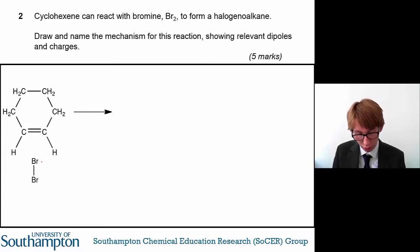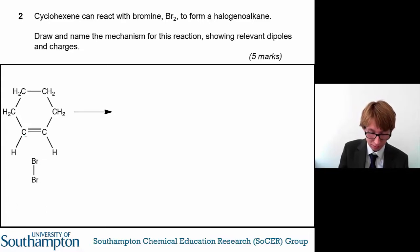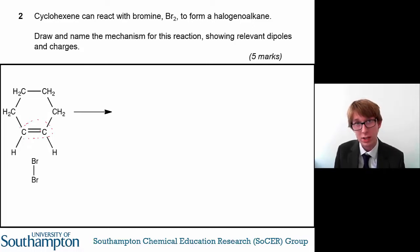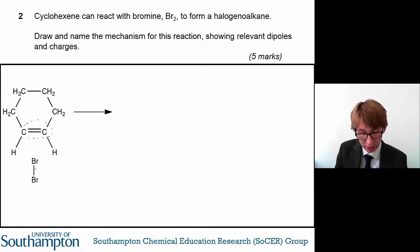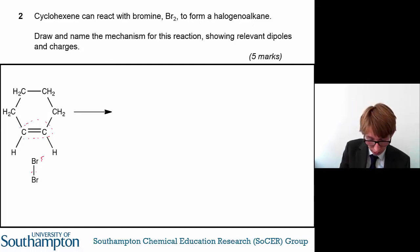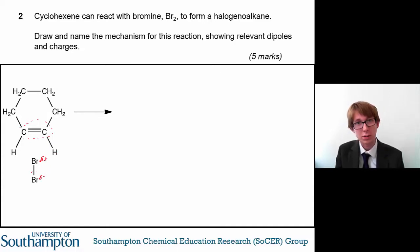However, when this bromine molecule comes close to the alkene, you'll see that the double bond is an area of high electron density. The electrons in this region repel the electrons in the bromine-bromine bond, pushing them away, so you form a dipole — a delta positive on one bromine atom and a delta negative on the other.